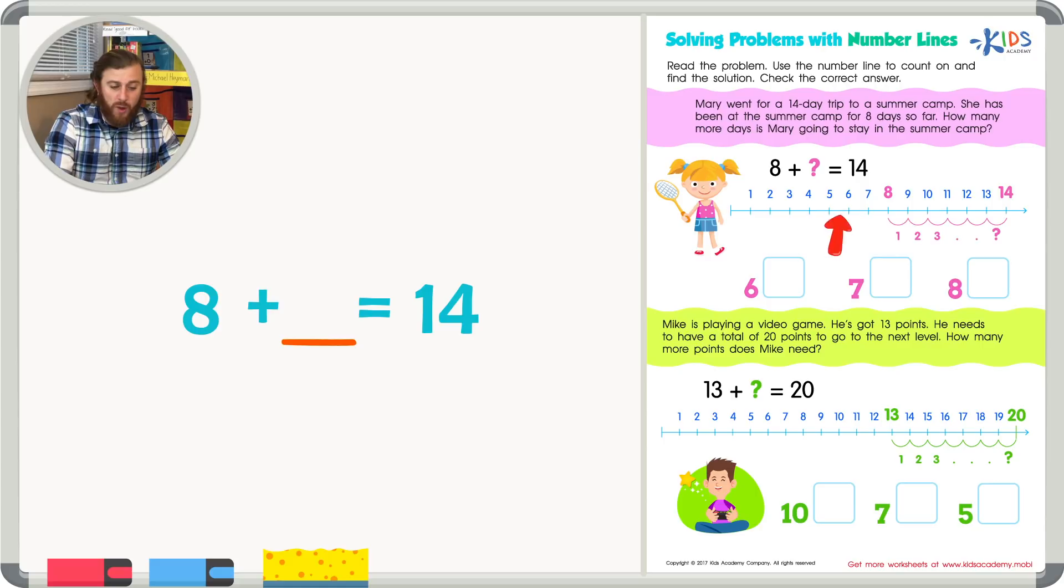Let's use our number line to help us count on and figure out how many days are left in Mary's trip. So we'll be counting from 8 up to 14. 8, 9, 10, 11, 12, 13, 14.